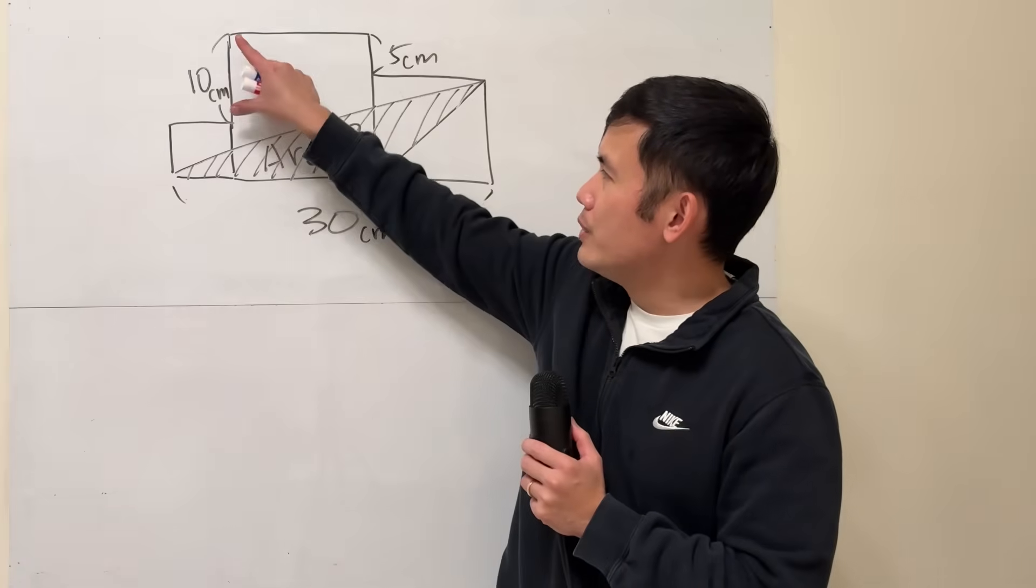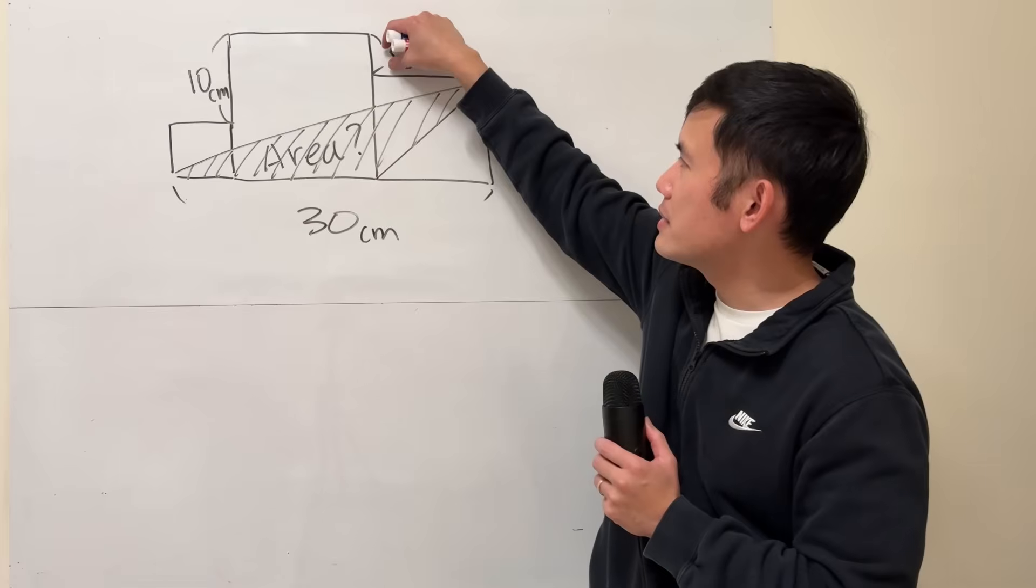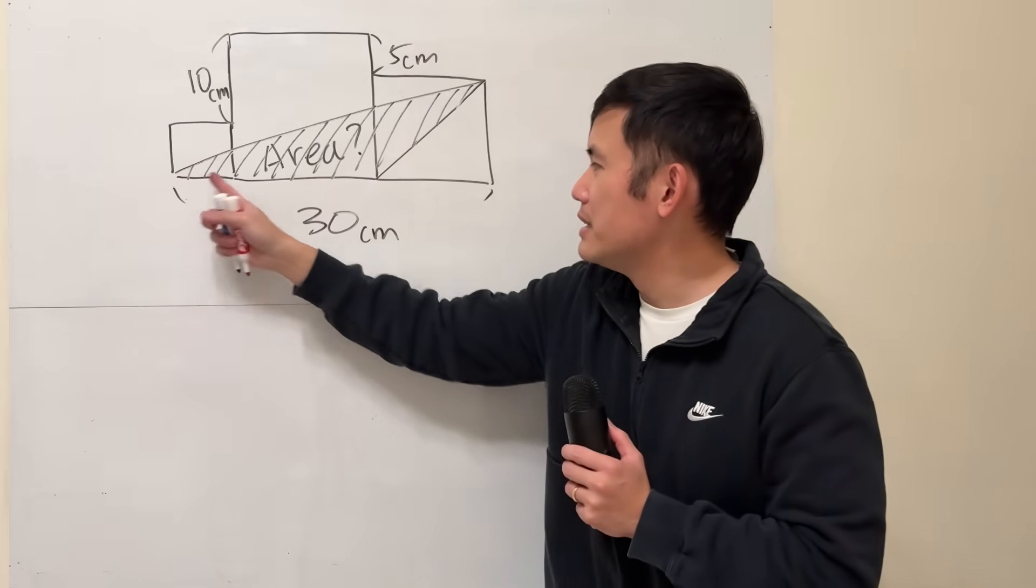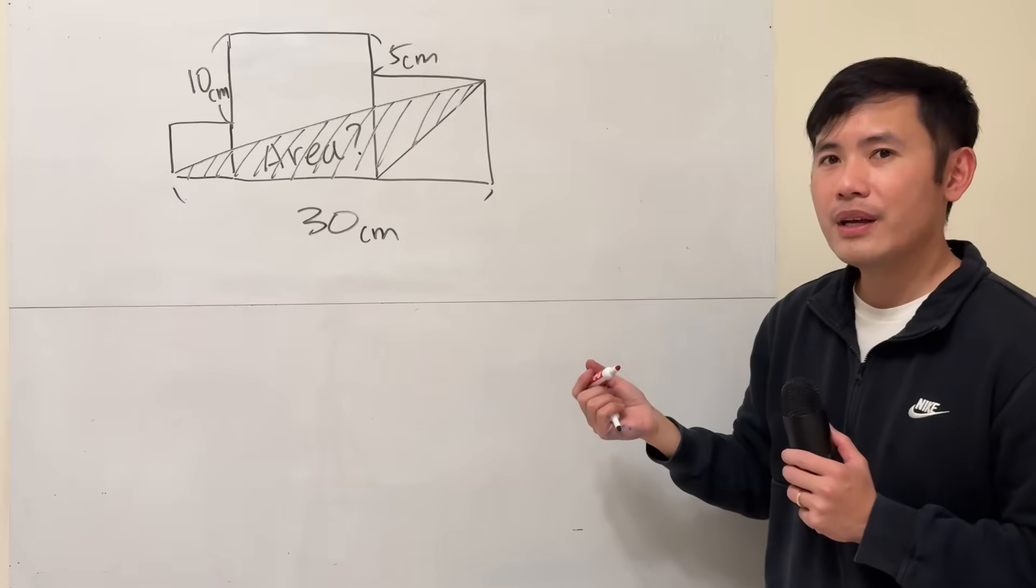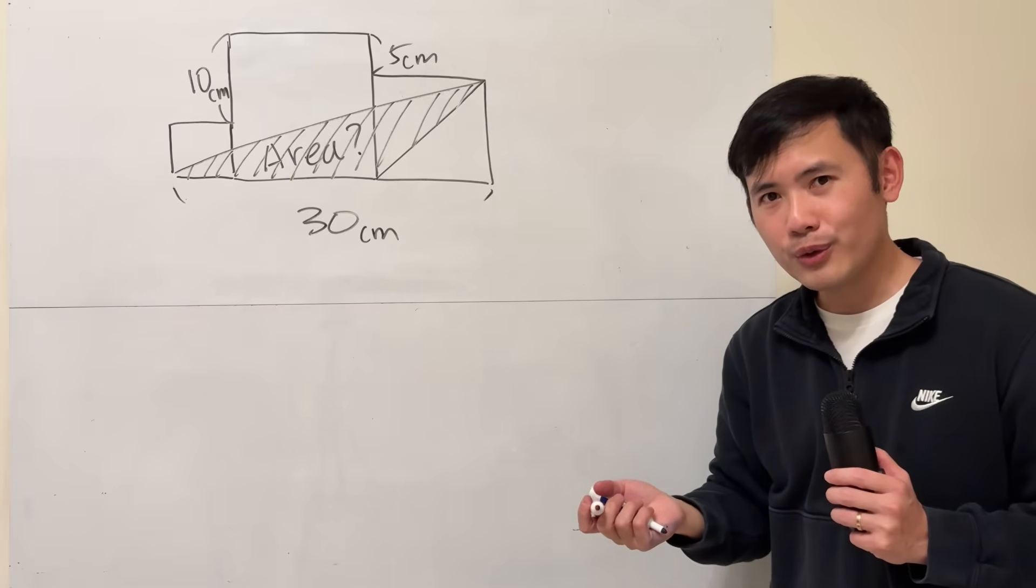We know that this right here is 10 centimeters and this is 5 centimeters and this is 30 centimeters and here is the triangle. If you want to find the area of the triangle you definitely have to use half base times height.